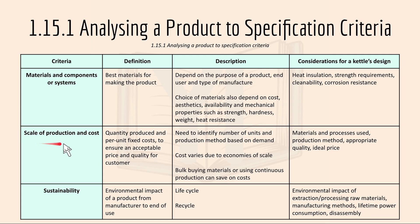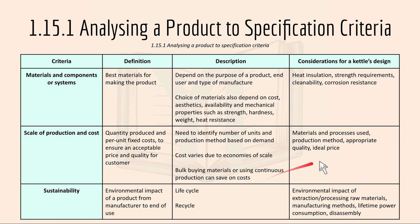For scale of production and cost, it's the quantity produced and per unit fixed cost to ensure an acceptable price and quality for the customer. There is a need to identify a number of units and production methods based on demand. Cost varies due to economies of scale, and bulk buying materials or using continuous production can save on cost. For a kettle, this covers the production method, appropriate quality, and an ideal price.